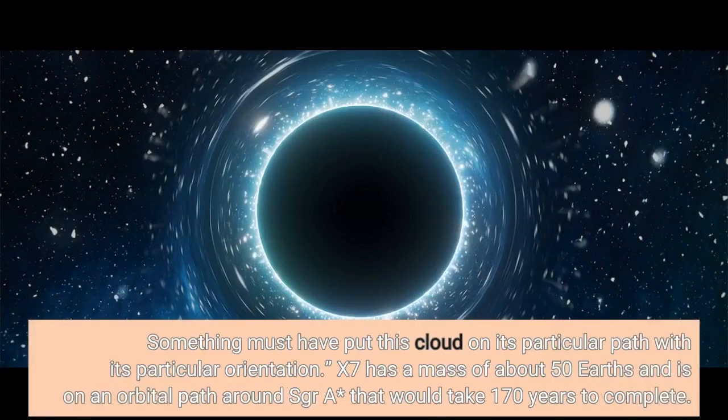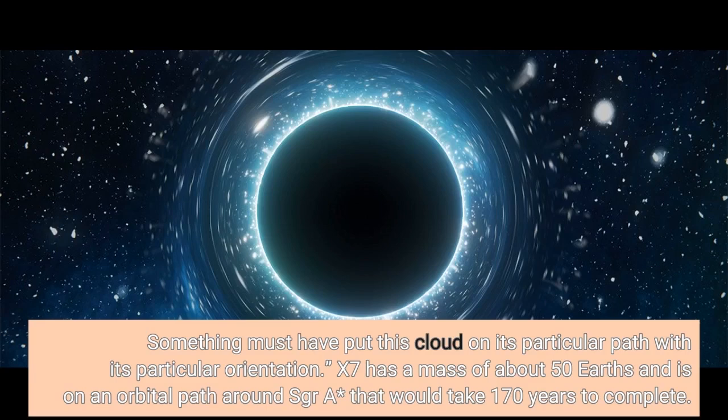Something must have put this cloud on its particular path, with its particular orientation. X-7 has a mass of about 50 Earths and is on an orbital path around SGR A asterisk that would take 170 years to complete.